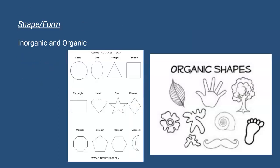We also have shape and form. Now the shapes, they say that there are two types of shape, which is inorganic and organic. Now inorganic shapes are kind of more man-made or geometric shapes, such as the circle, the square, rectangle, star. And organic shapes are more natural, so you find them a lot in nature. They're more flowy, curved, like this leaf or this shell here.